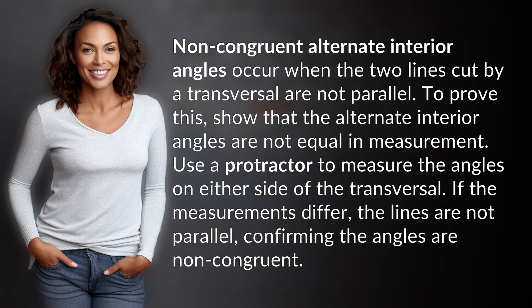Non-congruent alternate interior angles occur when the two lines cut by a transversal are not parallel. To prove this, show that the alternate interior angles are not equal in measurement.